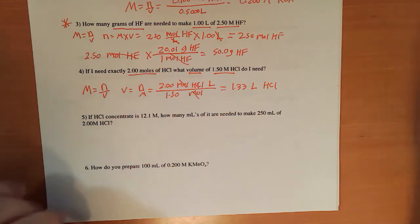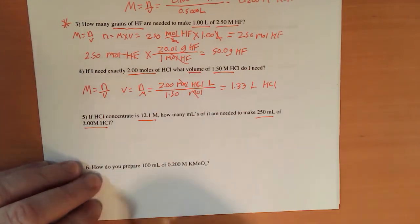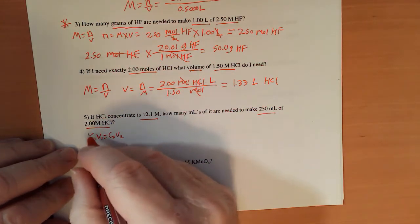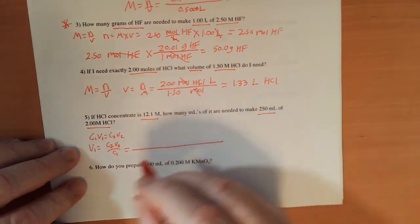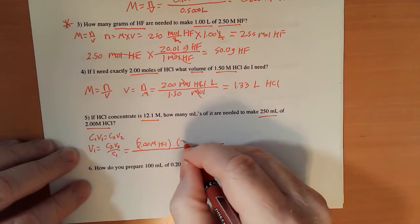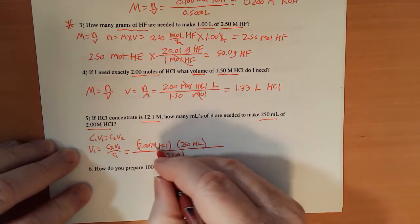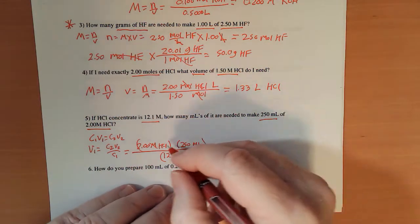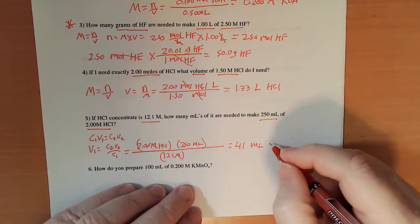Now we're going to do one of the dilution-style problems. HCl concentrate is 12.1 molar. How many milliliters are needed to make 250 milliliters of 2.00 molar? C1V1 equals C2V2. So I'm looking for the volume of this first solution. V1 equals C2V2 over C1. Now I have 2.00 molar HCl times 250 milliliters divided by the 12.1 molar. Molar cancels molar, and what I end up with is 41.3, and I have to call that 41 for sig figs, milliliters of the HCl.